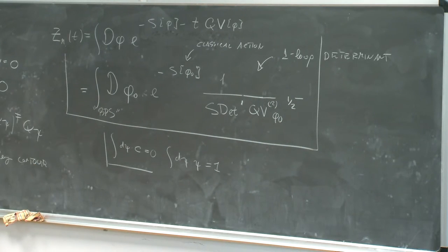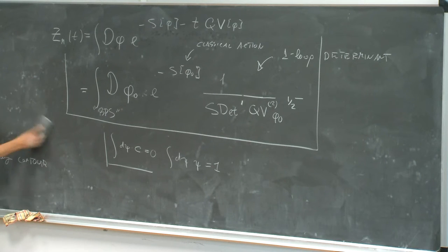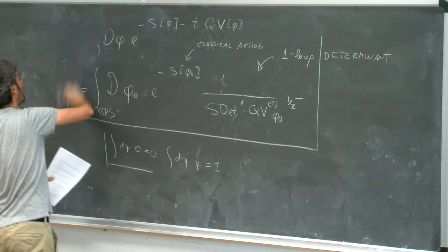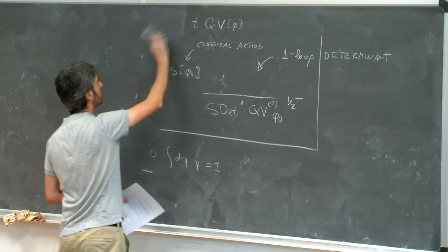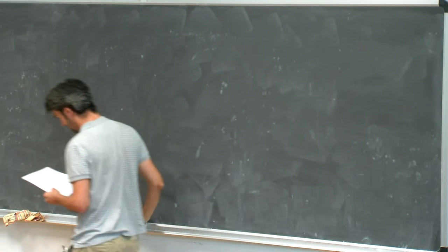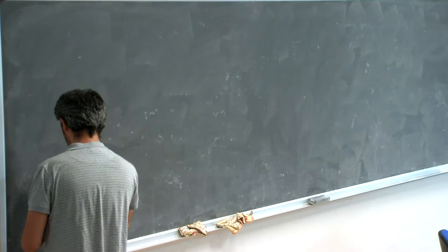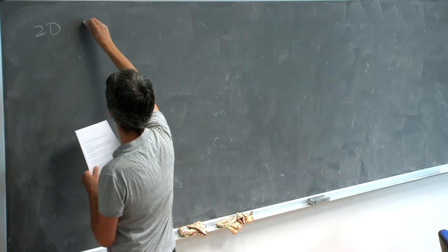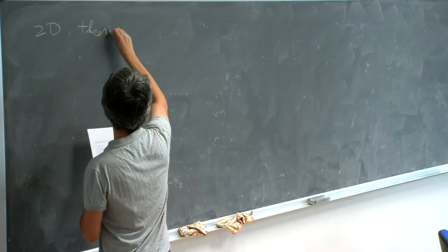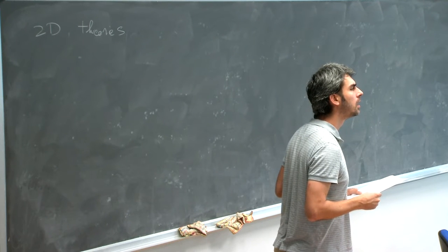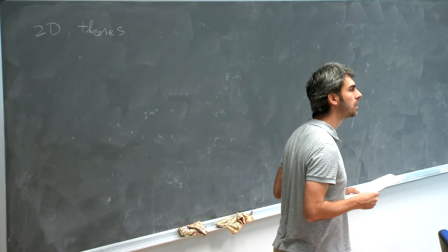So this was very abstract, and what I would like to do next is to study a specific example, so we see in some detail what sort of computations and results one can obtain. After all, localization is all about computing. So I will consider a particularly simple case — in particular we study two-dimensional theories with (2,2) supersymmetry, which means four supercharges.